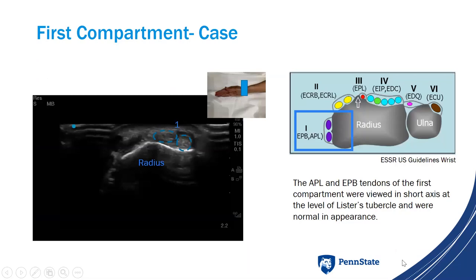For our case, we used a different transducer so image quality is not as high, but you can still identify the first compartment tendons in short axis — they look pretty normal with that broomstick appearance you expect. In my report I would say: 'The abductor pollicis longus and extensor pollicis brevis tendons of the first compartment were viewed in short axis at the level of Lister's tubercle and were normal in appearance.'